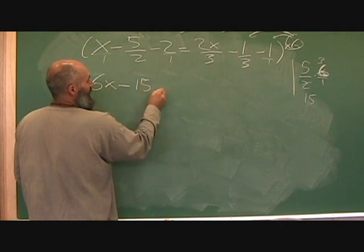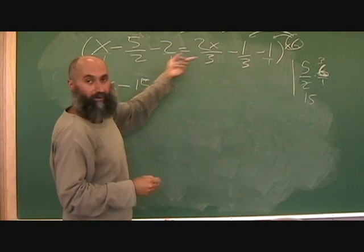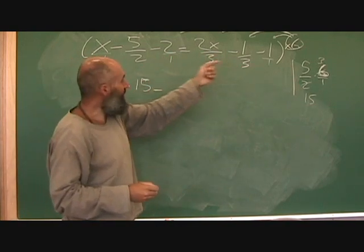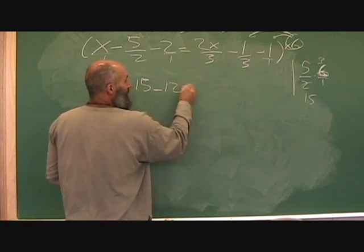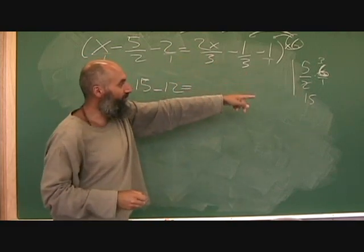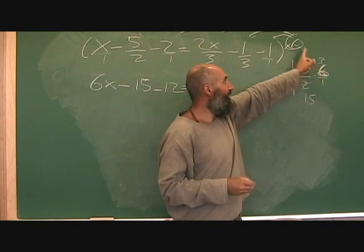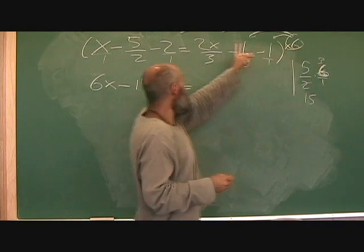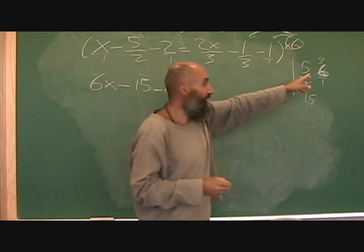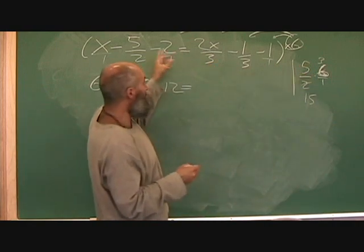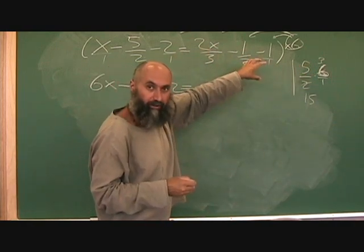This becomes fifteen. Minus - that's just one, one does nothing to six - so two times six is going to be twelve. Remember, when the two reduces the six down to three, this six is going to multiply the next term, not the three. Each multiplication is an individual operation.